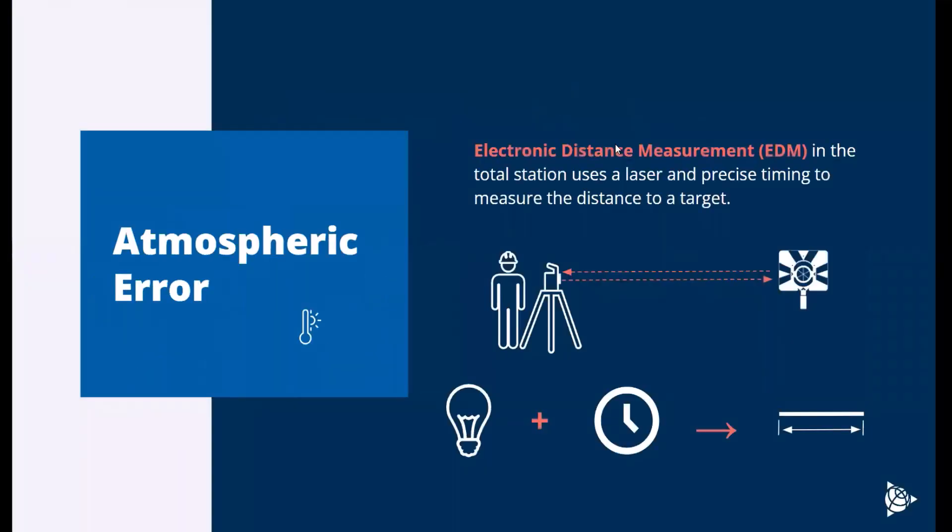Atmospheric error is one of the biggest influences, but thankfully it's one we can eliminate fairly easily. Total stations simply measure angle and distance. Atmospheric error is going to really mess with that distance measurement. Total stations use an electronic distance measurement or EDM, and they use the speed of light, which is a known constant, and precise timing.